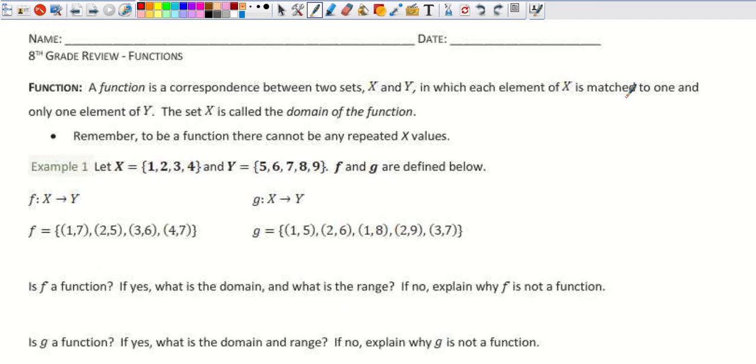X is called the domain, and basically what that means is there's no repeated x values. So we want to know if f and g are defined below. Is f a function, and what's the domain and range? So if we look at x, we have the point for x to y, so 1, 7, 2, 5, 3, 6, 4, 7. So do we have any repeated x values? With this set of numbers, we don't.